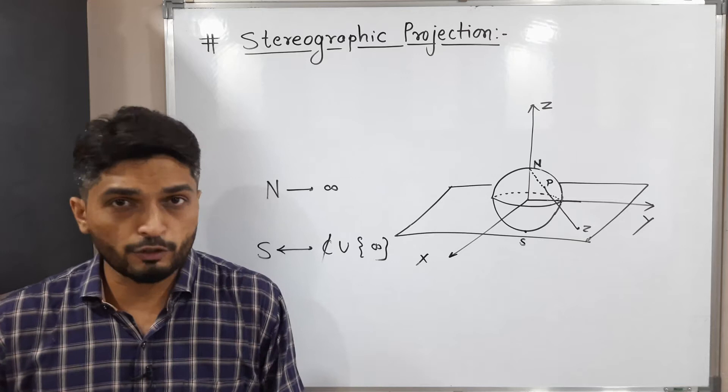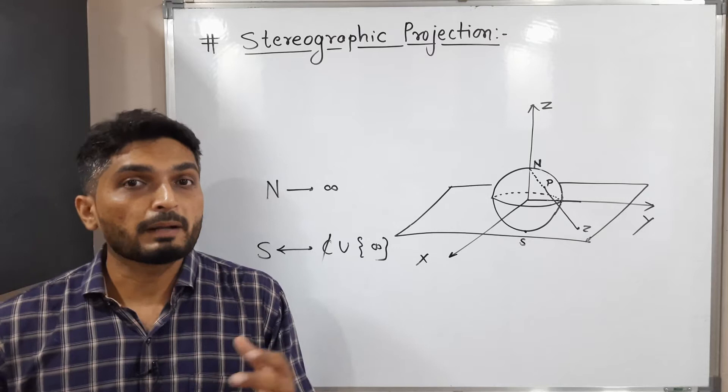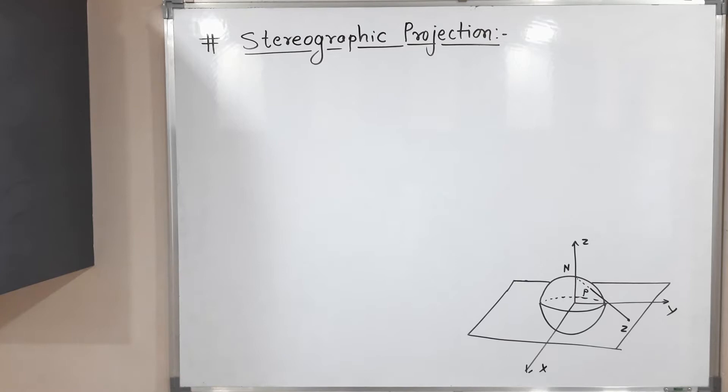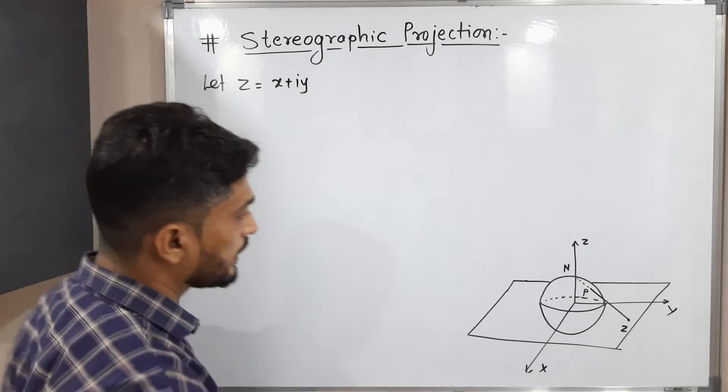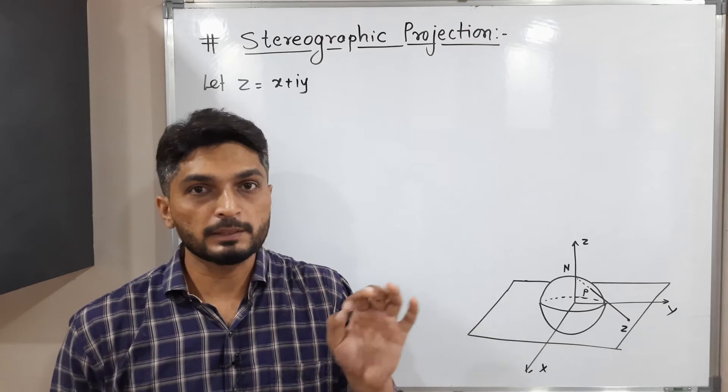There is a one-to-one correspondence between all points of the sphere and the extended complex plane, and this corresponding mapping we call stereographic projection. That is the actual concept of stereographic projection. Now let us discuss the mathematical logic behind it. Consider z equals x plus iy, so z is a point from the complex plane in the form x plus iy — real part plus i times imaginary part.